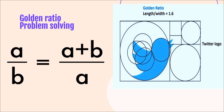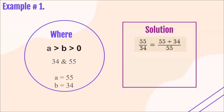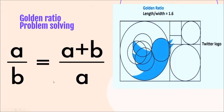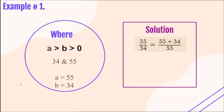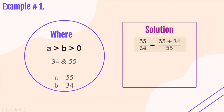So let's proceed to problem solving. The Golden Ratio — we can say that two numbers are in Golden Ratio if they satisfy the equation A over B equals A plus B over A, where A is greater than B and B is greater than 0. So A is always greater than B. For example, we have 34 and 55. Our A equals 55 because A is always the larger number, and our B equals 34.